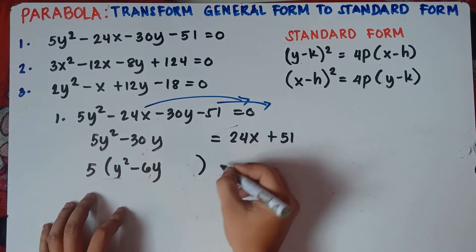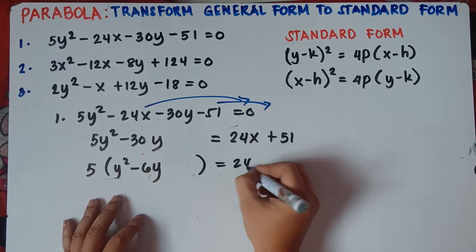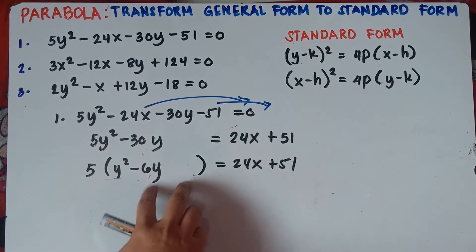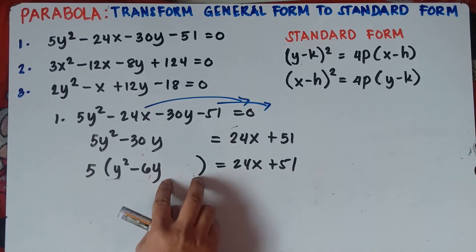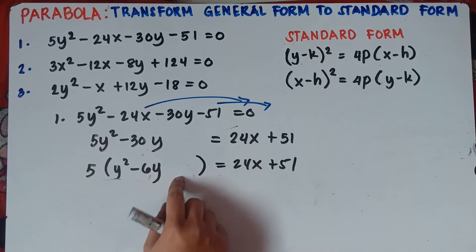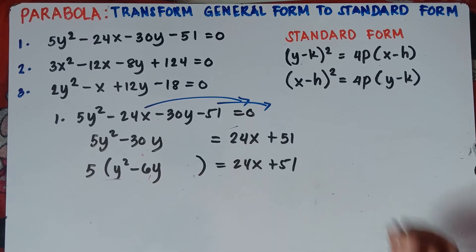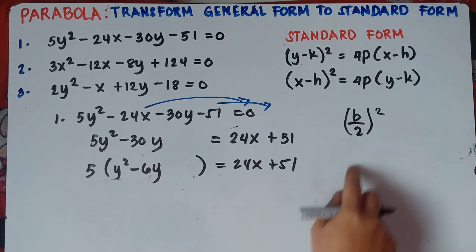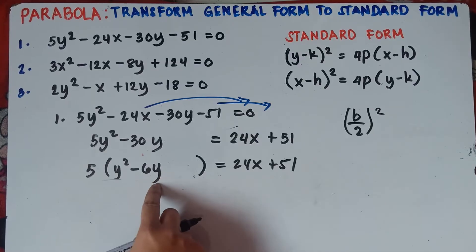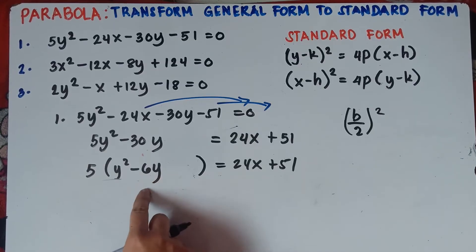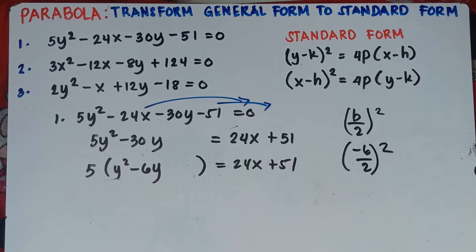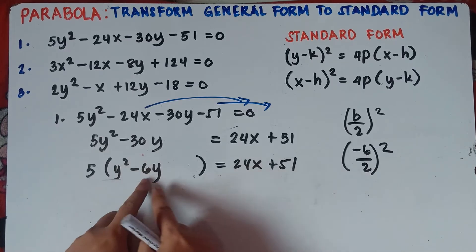Next step: completing the square. We need to add a new constant using the formula b divided by 2, quantity squared. Our b is the coefficient beside y — the linear term. So our b is negative 6. Negative 6 divided by 2 is negative 3, and negative 3 squared gives us positive 9. So we add plus 9 inside the parentheses.